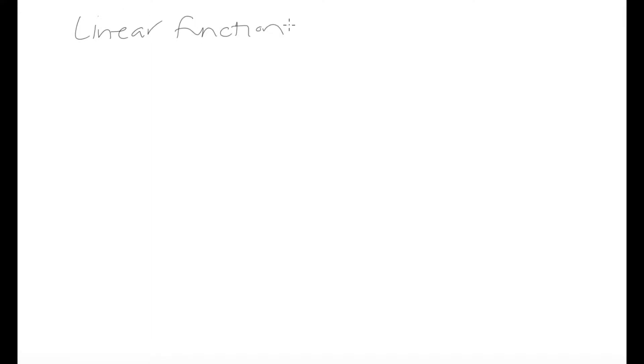We ended off the last video with an introduction into functions, and in this video we're going to go over a certain type of function known as a linear function. A linear function is a polynomial that has either zero or first-degree terms, meaning the terms in our function have variables raised to the power of either zero or one.